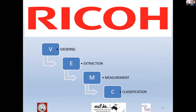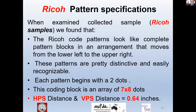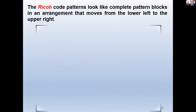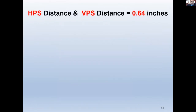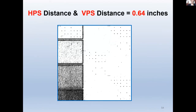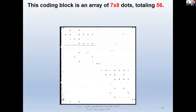When we applied our strategy of viewing, extraction, measurement, and classification on the Ricoh type collected samples, we found that the Ricoh code pattern looks like complete pattern blocks arranged from lower left to upper right. Each pattern begins with two dots in all samples. The horizontal and vertical pattern separation distance both equal 0.64 inches. This coding block is an array of 7 × 8 dots, totaling 56 points or sites.